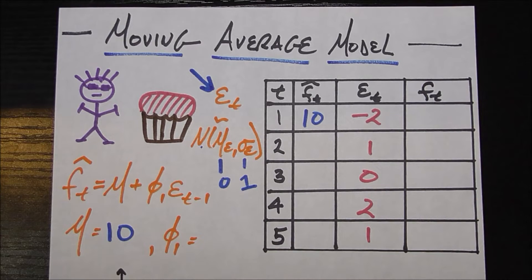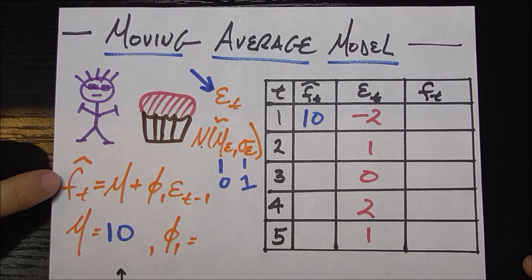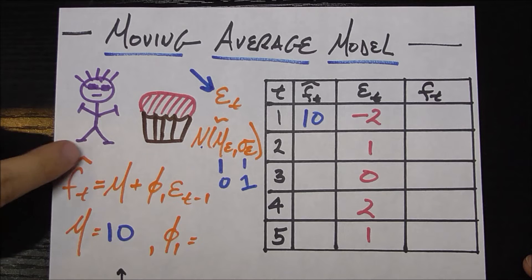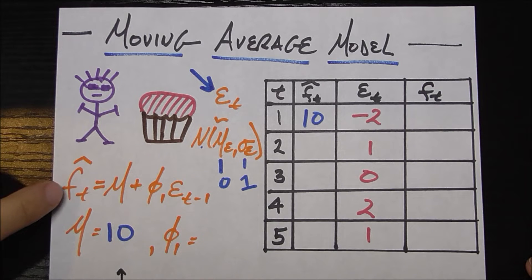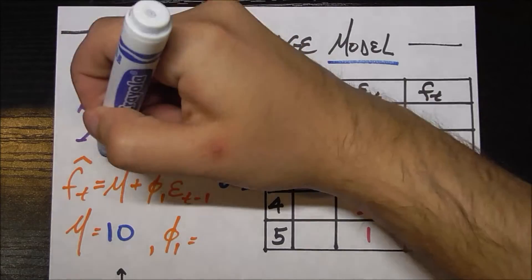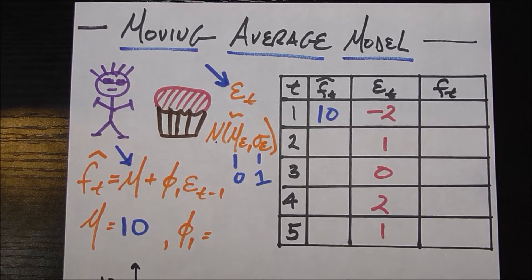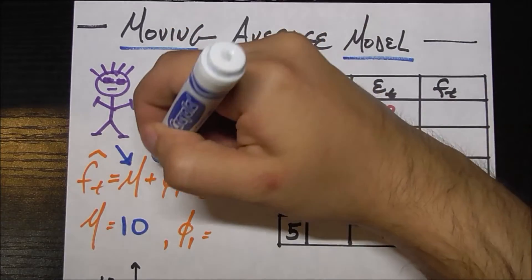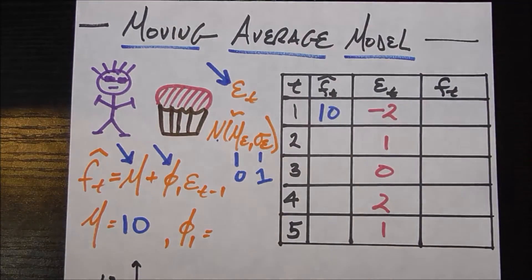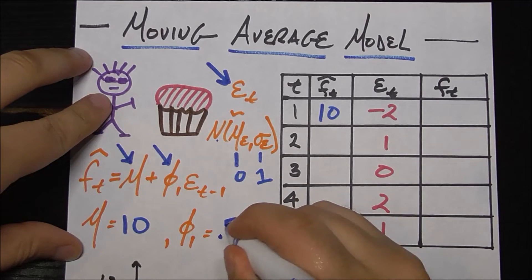So for example, he might say you're wrong by two cupcakes. You brought two cupcakes too many or one cupcake too less. Or he might even say you brought just the right amount. The point is he's going to say that you brought the wrong amount, normally distributed, mean zero, and standard deviation one. So you know this professor has a reputation for being kind of crazy. So you kind of factor that into the amount of cupcakes that you're going to bring to the party each month. So the number of cupcakes you're bringing each month is going to be given by f sub t hat, which is your predicted number of cupcakes. I call it f for food, but you can just think of it as cupcakes. And that's going to be equal to, remember, your mean mu, which is 10. So that's going to be your baseline that you're always going to bring, plus some coefficient, phi sub 1, and we're going to say phi sub 1 is 0.5.